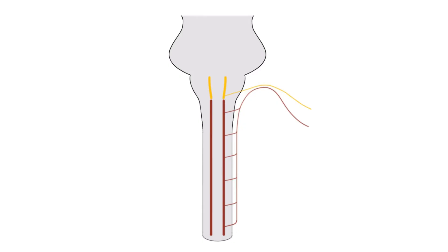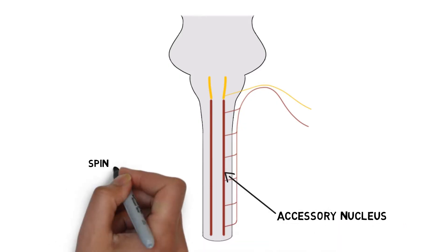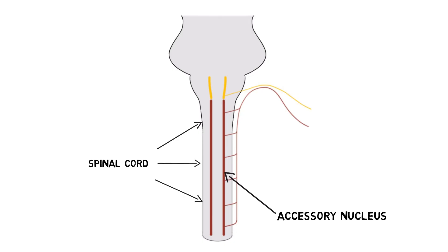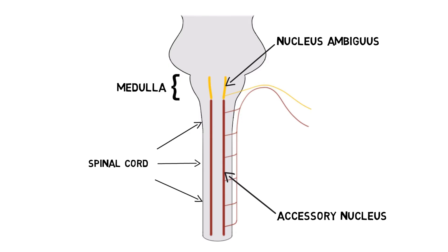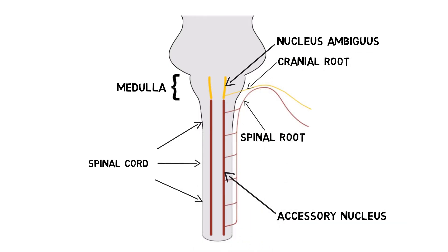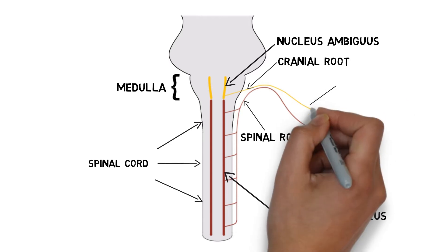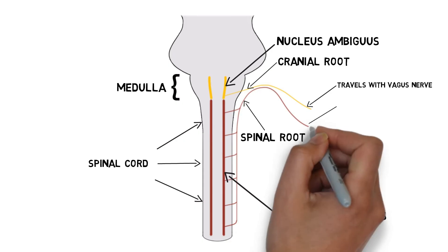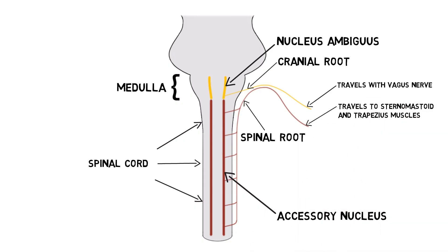Traditionally, the accessory nerve has been divided into a spinal component, which originates in the accessory nucleus in the spinal cord, and a cranial component, which originates in the nucleus ambiguus in the medulla. The fibers of the spinal portion leave the spinal cord as a series of rootlets, which come together to form the spinal root. The spinal root ascends to join the cranial root extending from the medulla. The cranial and spinal roots travel together briefly as they exit the skull, but then the cranial portion travels with the vagus nerve, while the spinal portion extends to the sternomastoid and trapezius muscles. Because the cranial portion can be functionally considered part of the vagus nerve, often the spinal portion is considered the true accessory nerve.